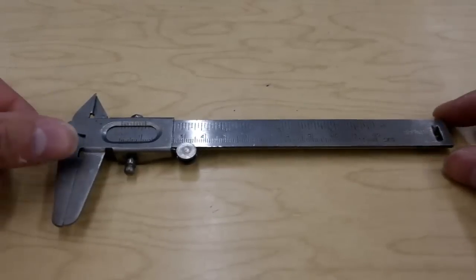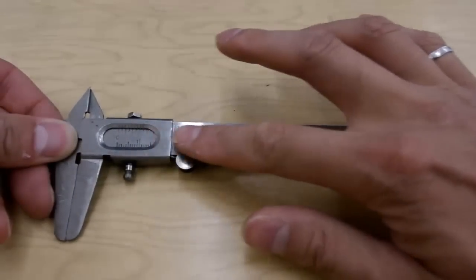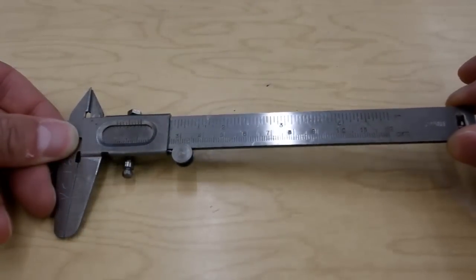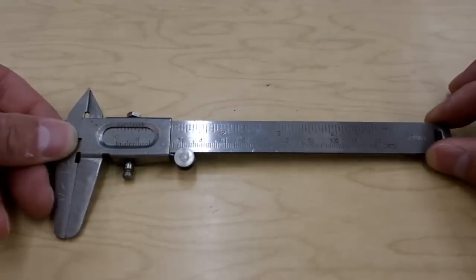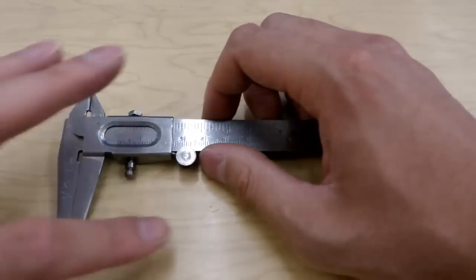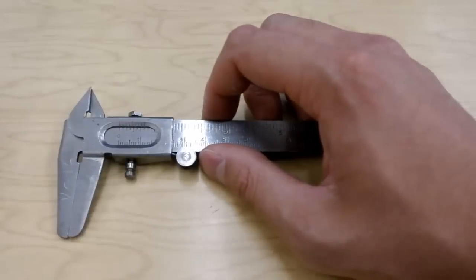Now most of this contraption here does look like a regular ruler. You've got your centimeter scale, millimeter scale, and the inches on top, which we don't use. It's mostly what's happening up front here that allows us to get down to that extra digit.